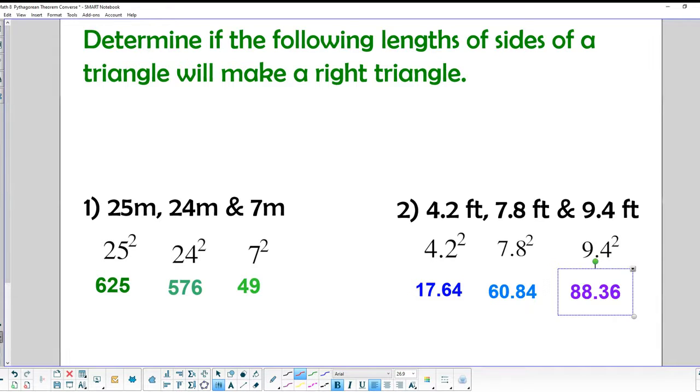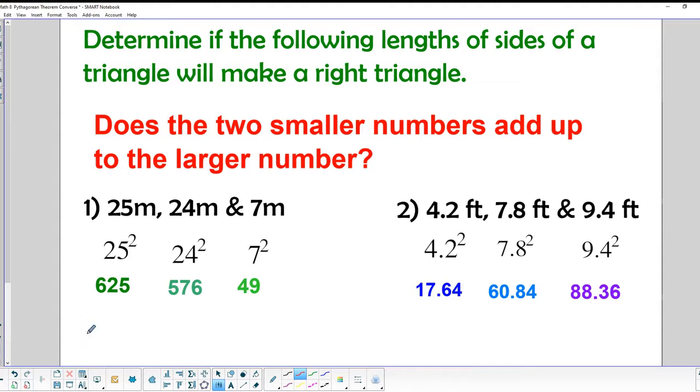So then the next question is, do the two smaller numbers add up to the larger number? So we've squared all the numbers, and the two smaller numbers would have to be the A and the B in order for this to work out the right way. So we just basically add those two numbers together, and if they equal that number, then we are in good shape. If not, then this is not a right triangle. So 576 plus 49 equals 625. So that does, in fact, equal 625. So does this, do these sides make a right triangle? The answer then is yes.